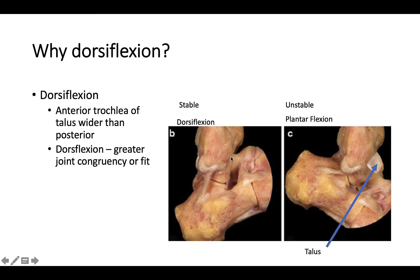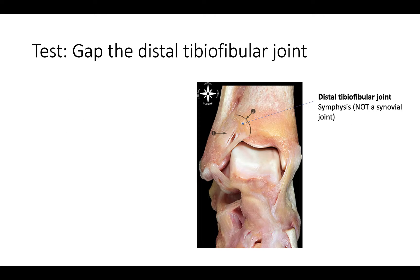We see the calcaneal fibular and the anterior talofibular ligaments, but rotation in dorsiflexion will gap or force open the distal tibiofibular joint. In plantar flexion there's less stability — the trochlea of the talus is exposed, meaning there's less congruity at the joint and more flexibility in that position.